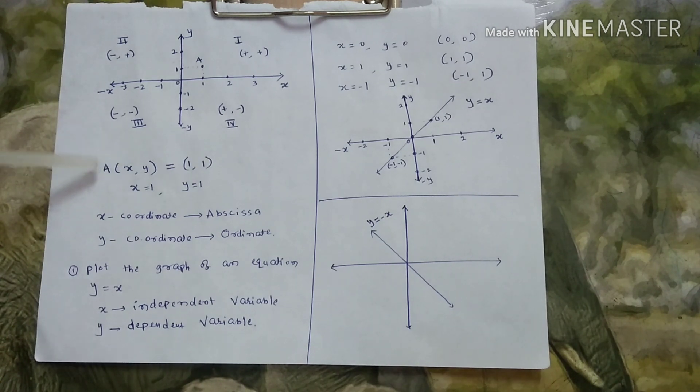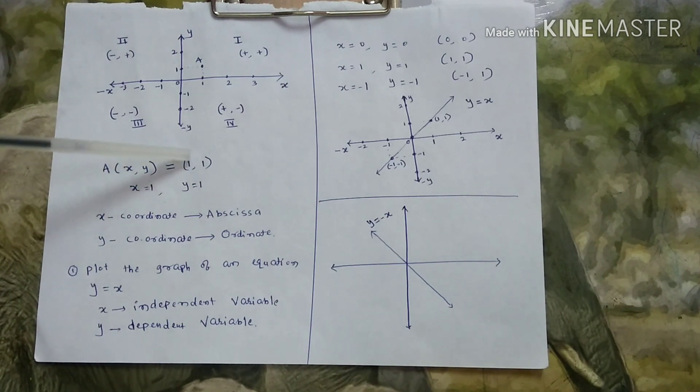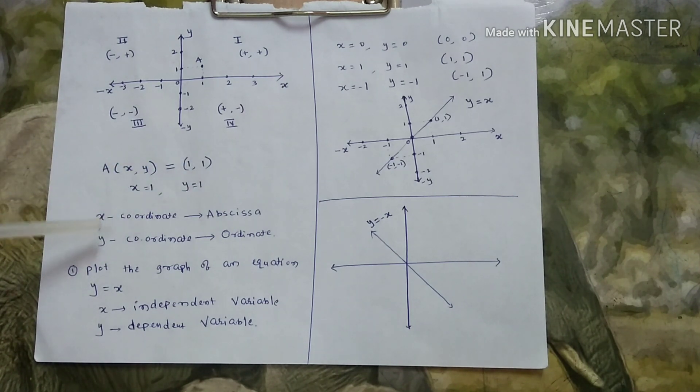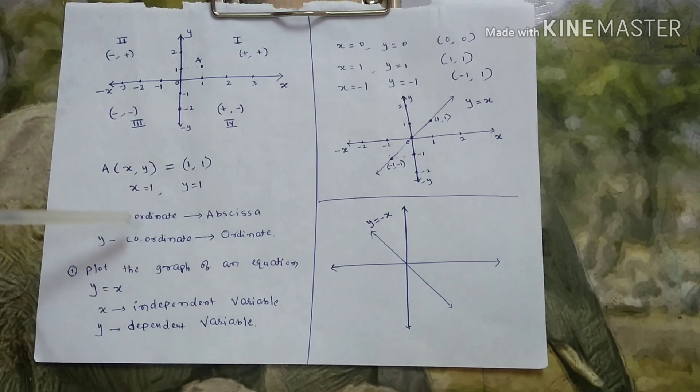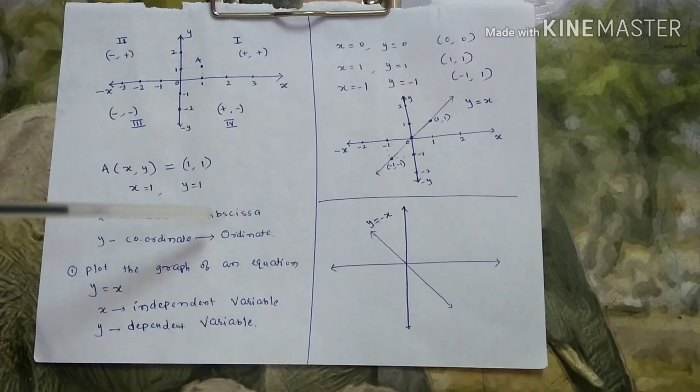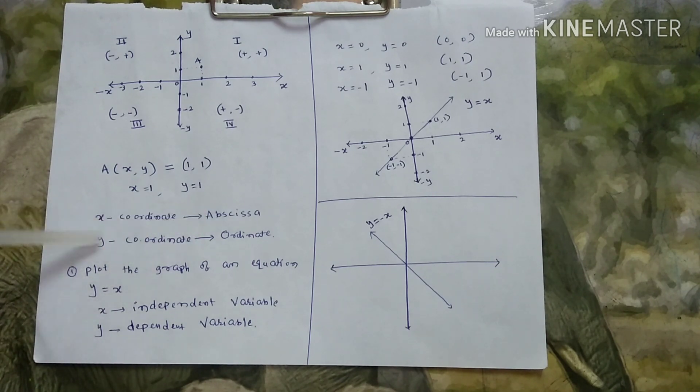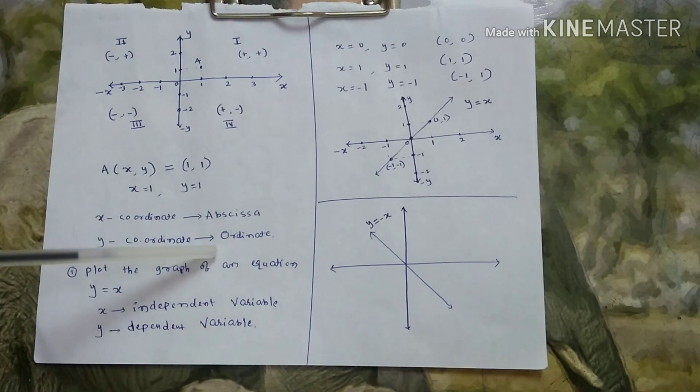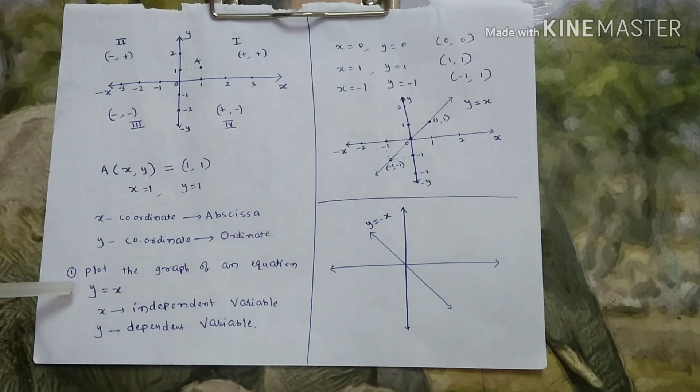So, the example already I have given. This point here, x comma y is equal to 1 comma 1. So, x is equal to 1 and y is equal to 1. This x-coordinate, there is another name for x-coordinate. That is abscissa. Y-coordinate. Another name is ordinate.